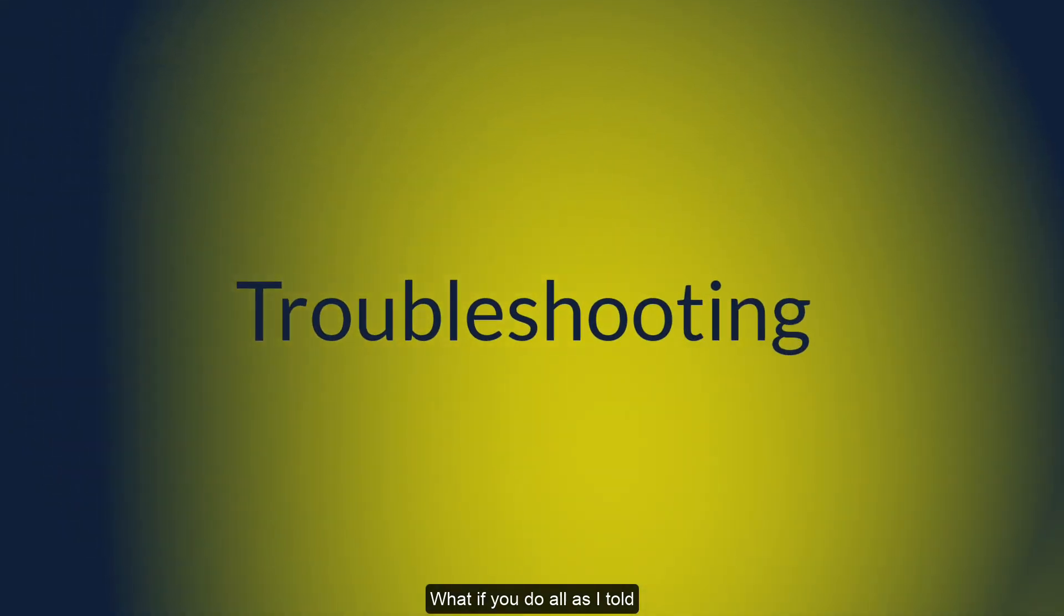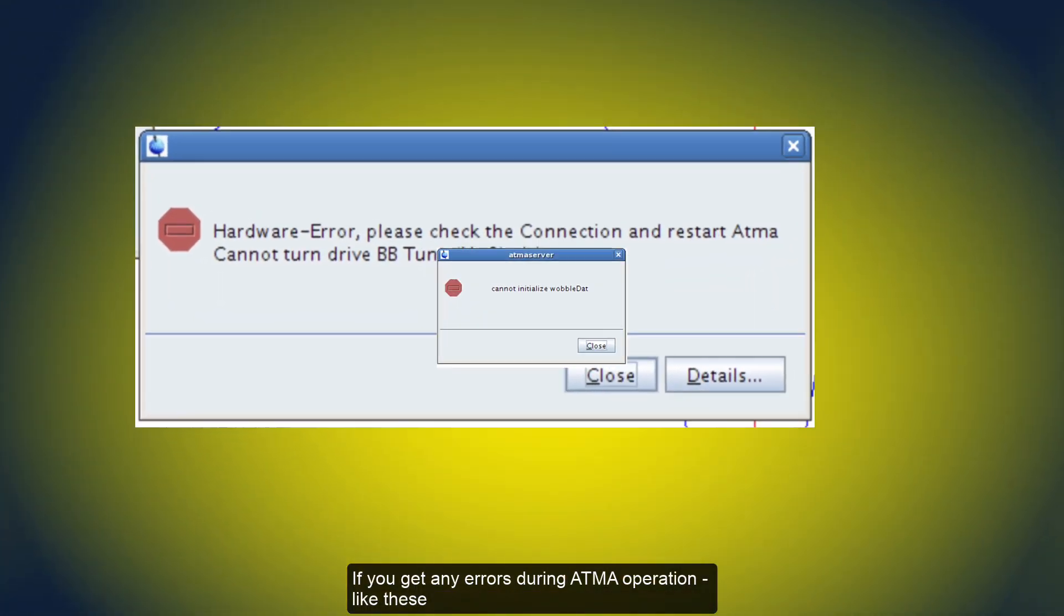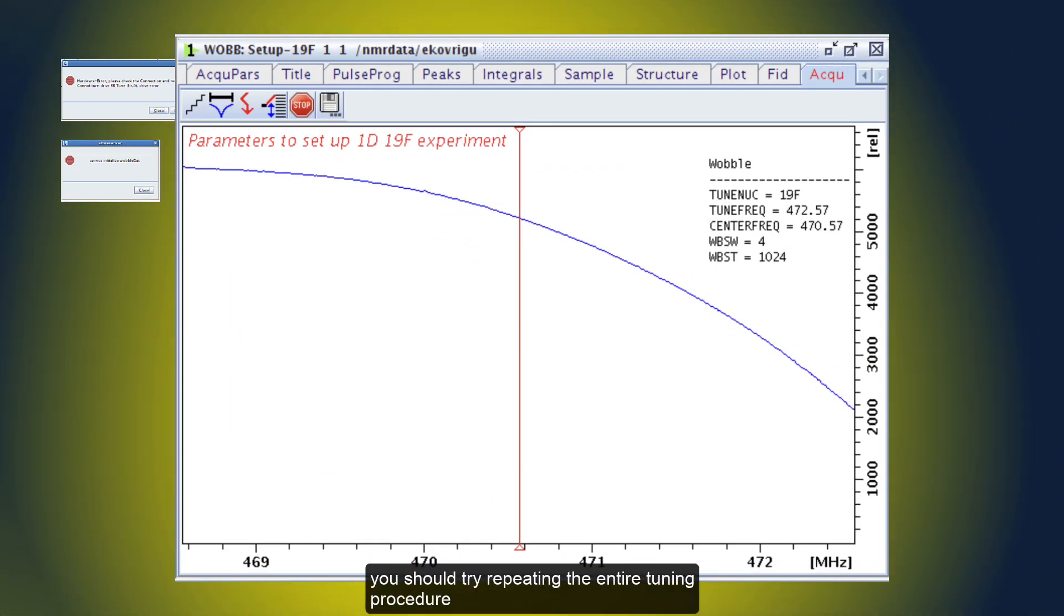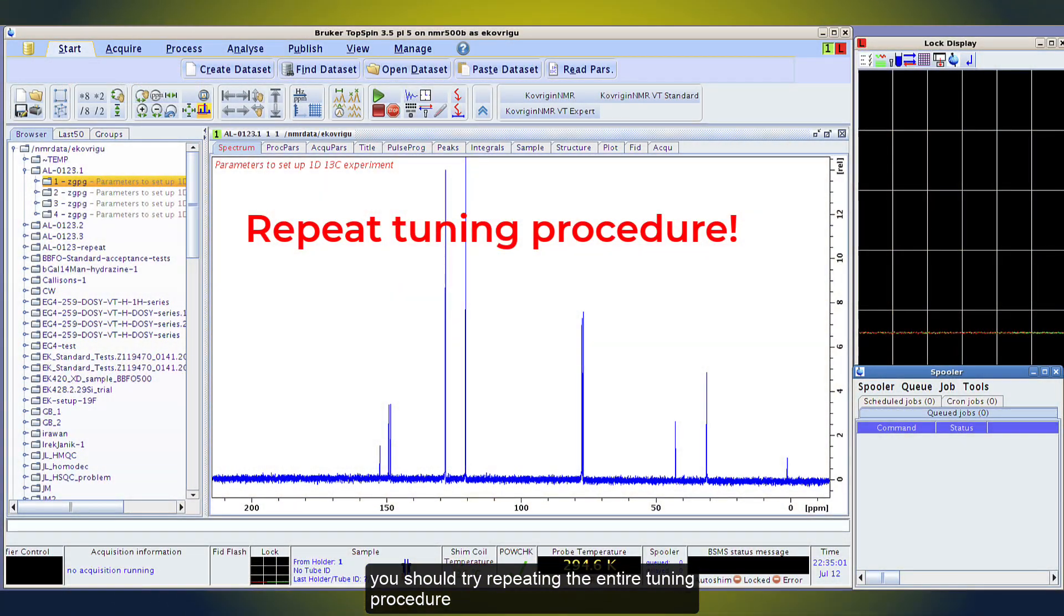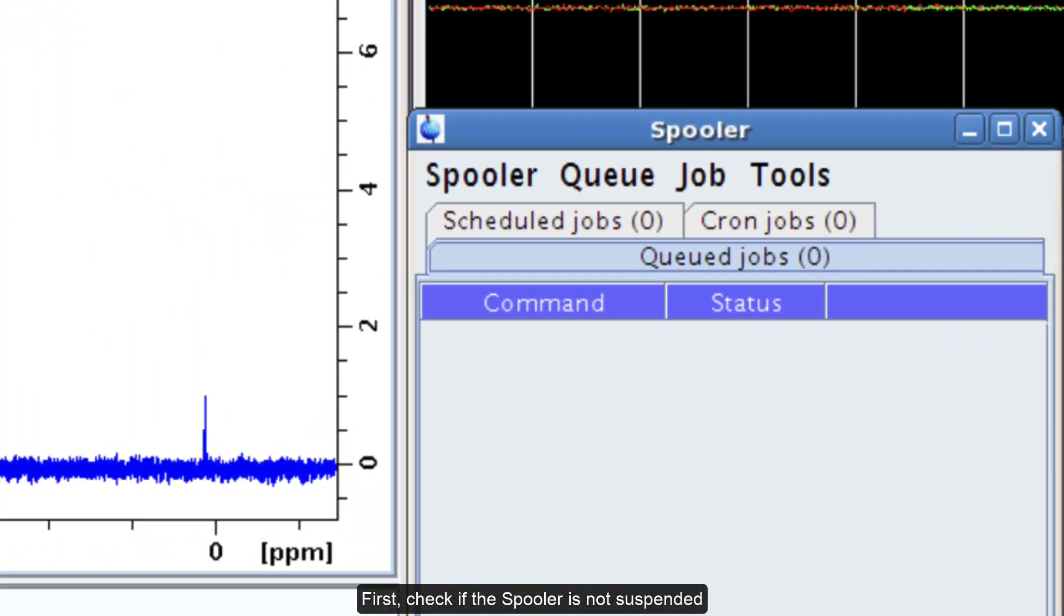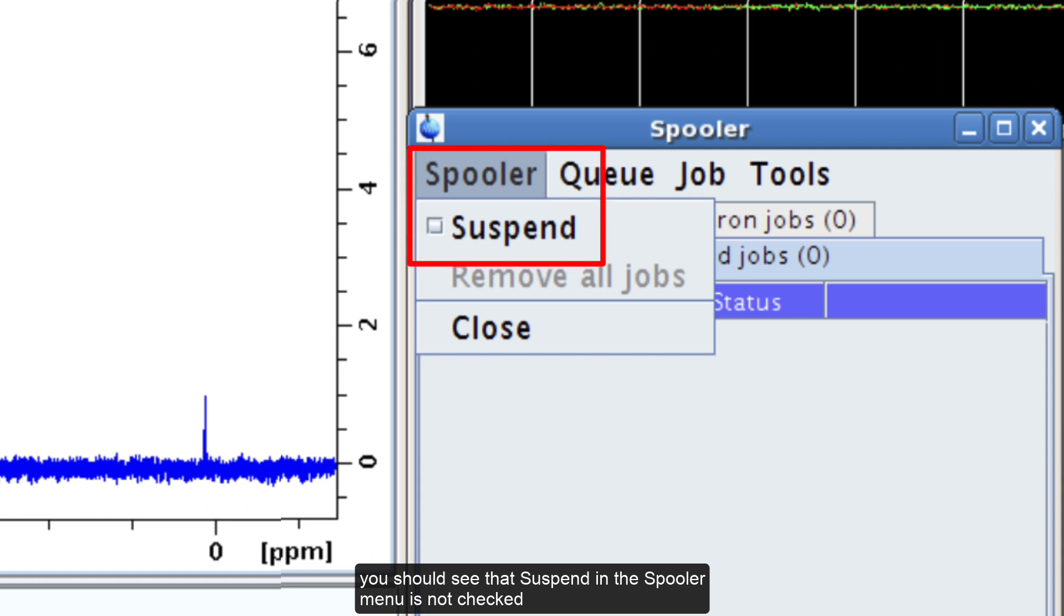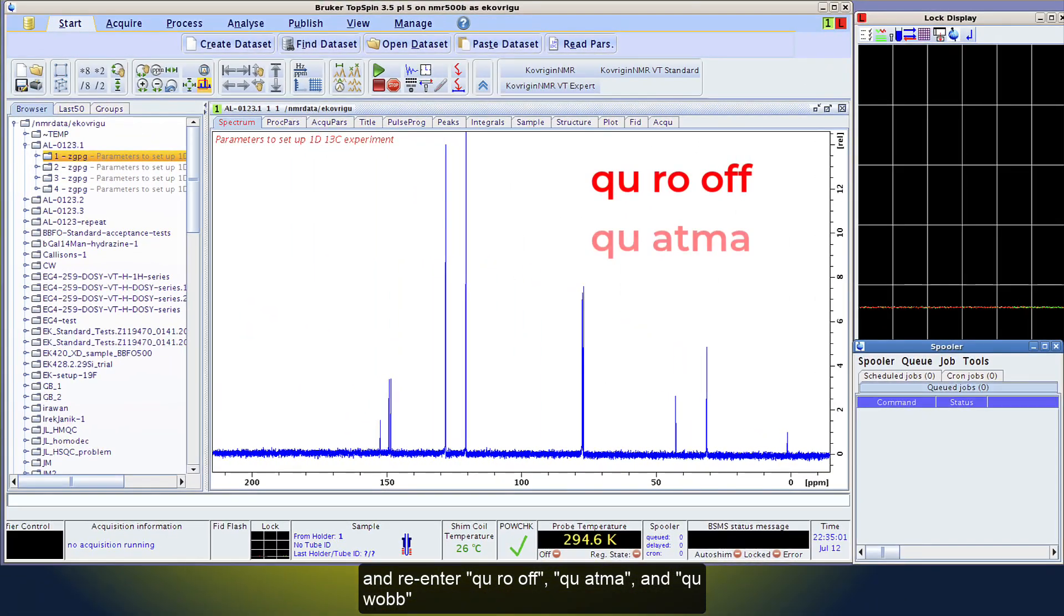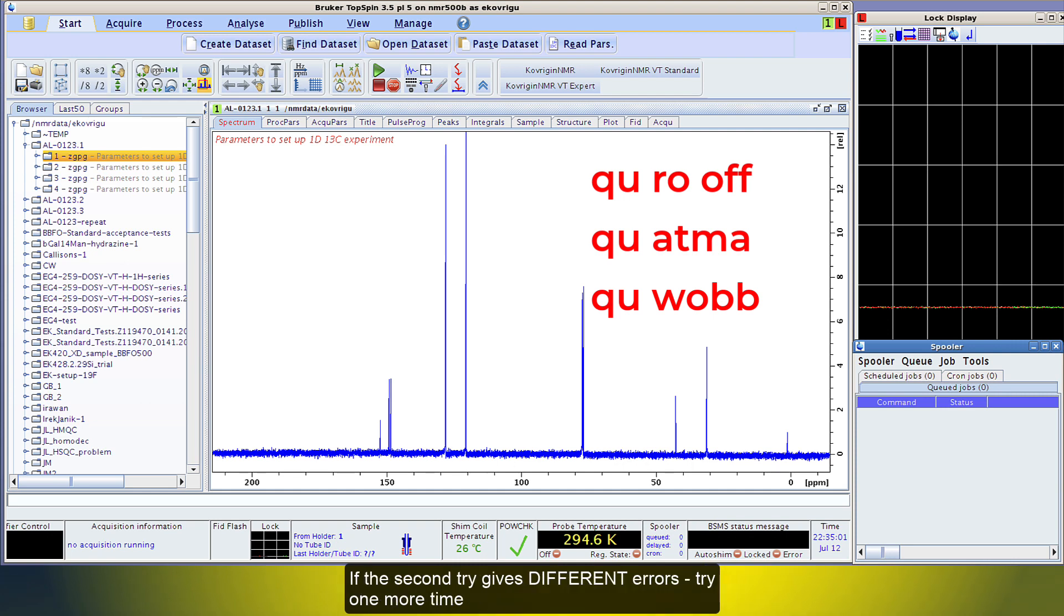What if you do all as I told you, but tuning does not succeed? If you get any errors during an ATMA operation like this, or WARB shows you a poorly tuned probe in the end, you should try repeating the entire tuning procedure. First, check if the spooler is not suspended. You should see that suspend in the spooler menu is not checked. Then re-enter QU-RO-OFF, QU-ATMA, and QU-WARB. If the second try gives different errors, try one more time. ATMA is capable of recovering from some errors by itself. If you get the same errors, the problem is persistent.